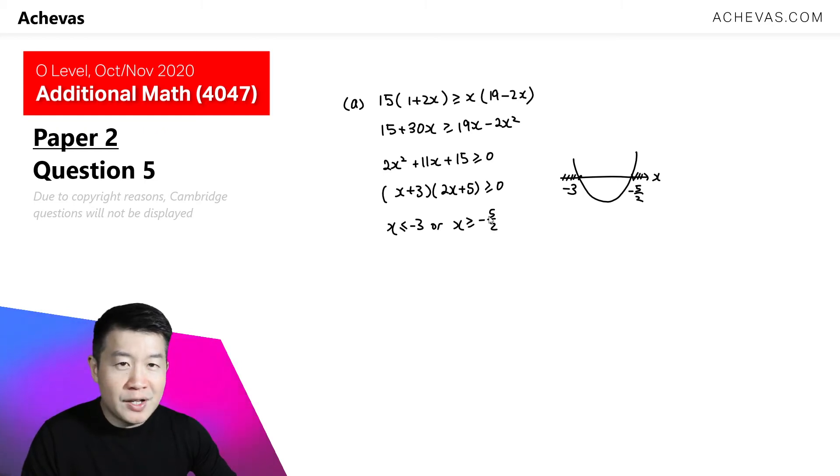And the question actually wants us to present the answer on the number line. So let me just sketch this on the number line. So on my number line for x, we will have two numbers. One will be minus 3. The other one is going to be minus 5 over 2. It is less than or equal to minus 3, so we have an arrow here. We have a solid dot here. It is bigger or equal to minus 5 over 2, so a solid dot here and an arrow to the right.